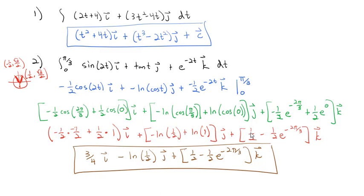Calculus with vector-valued functions is not too difficult — it's basically extending what we saw in calc 1 and calc 2 with derivatives and integrals, just doing it with every single component all the way through. We also introduced the idea of the unit tangent vector, which will be very important as this chapter progresses. Take a look at a few of these on the practice assignment, and we'll see you in class to answer any questions.